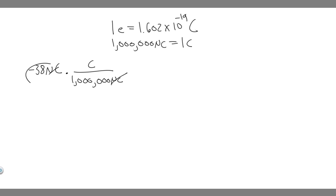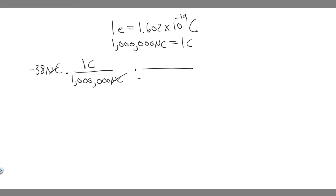So now we want to convert from coulombs to electrons. We know that one electron is equal to 1.602 times 10 to the minus 19 coulombs. But keep in mind that this charge is negative, so this number is actually going to be negative — it's equal to minus 1.602 times 10 to the minus 19 coulombs, and we know that equals one electron. So this will cancel the coulombs and we convert from minus 38 microcoulombs all the way to electrons.